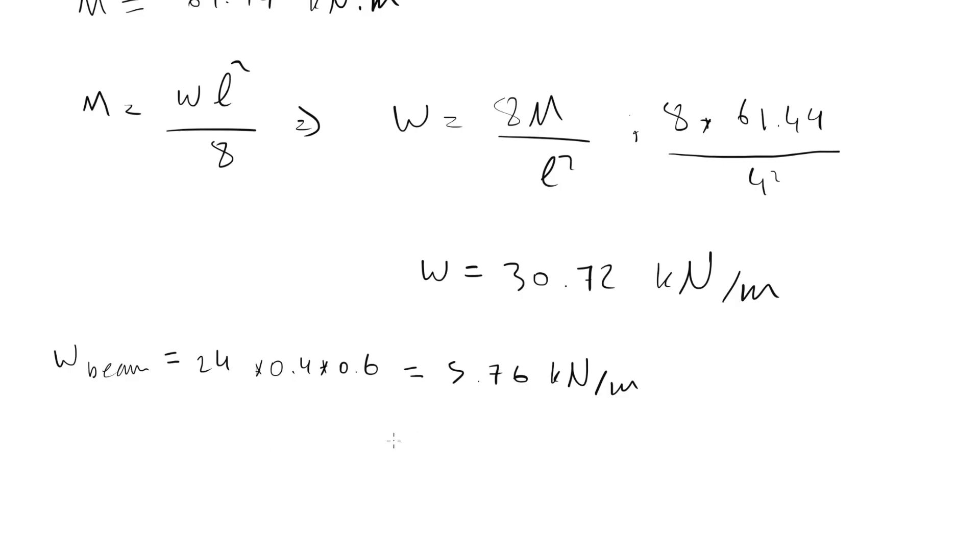Now we should subtract this amount from 30.72 to have the net applicable or net allowed value of load on the beam. So let's say W net equals to 30.72 minus 5.76, which equals to approximately 25 kilonewton per meter.